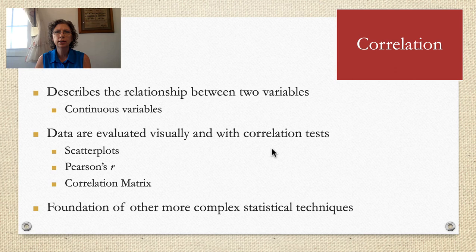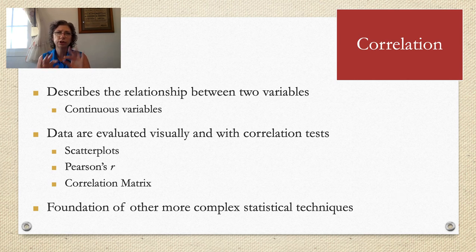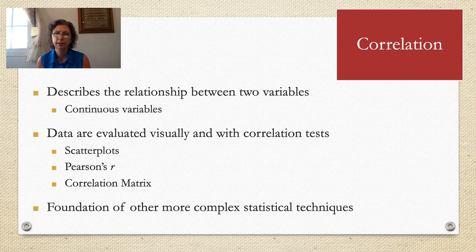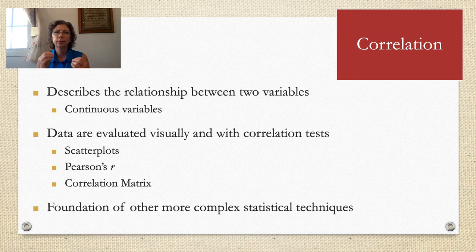Data are evaluated visually and with correlation tests because they're collected about participants as they are. We look at them visually in scatter plots — the correlation coefficient has values on the X and values on the Y and you see if there's a trend upward or downward. That can also be tested with Pearson's correlation coefficient, or Pearson's R test. The correlation matrix looks at Pearson's R between more than two variables, examining all the pairwise relationships, and we'll work on that in our homework correlations assignment.